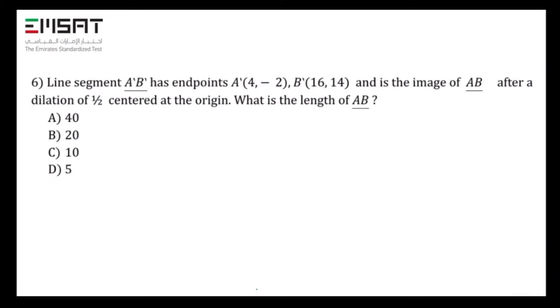Question 6. The line segment AB has endpoints A which is (4, -2), B which is (16, 14), and is the image of AB after a dilation of 1/2 centered at the origin.